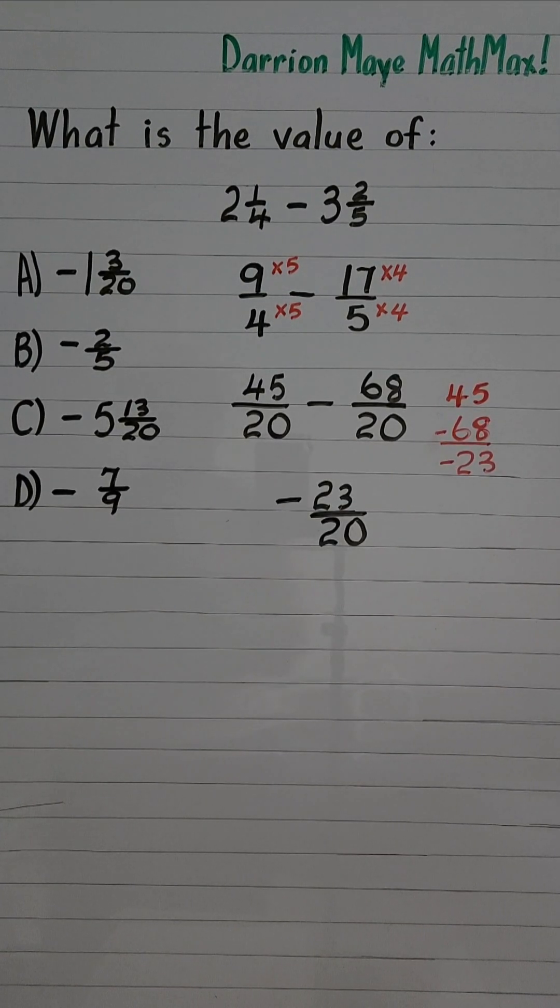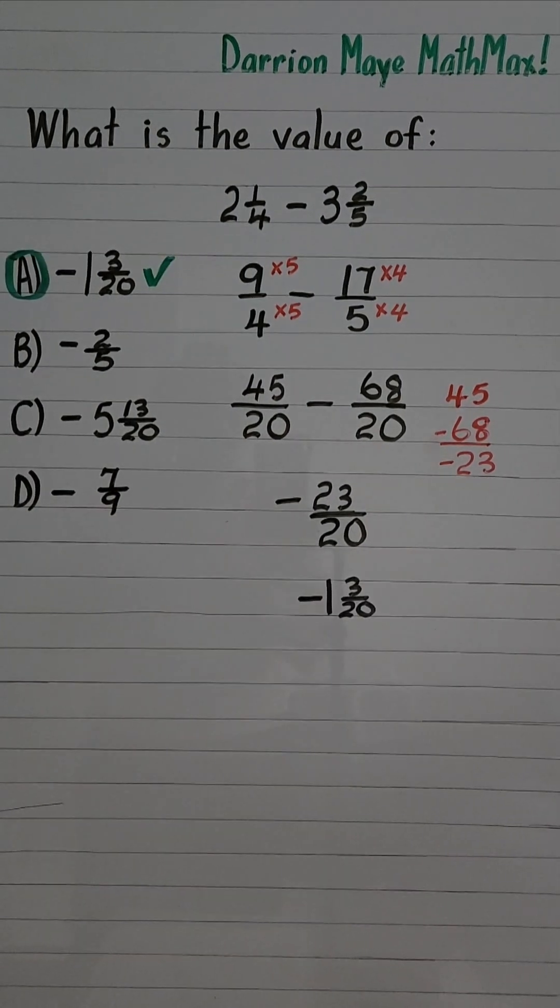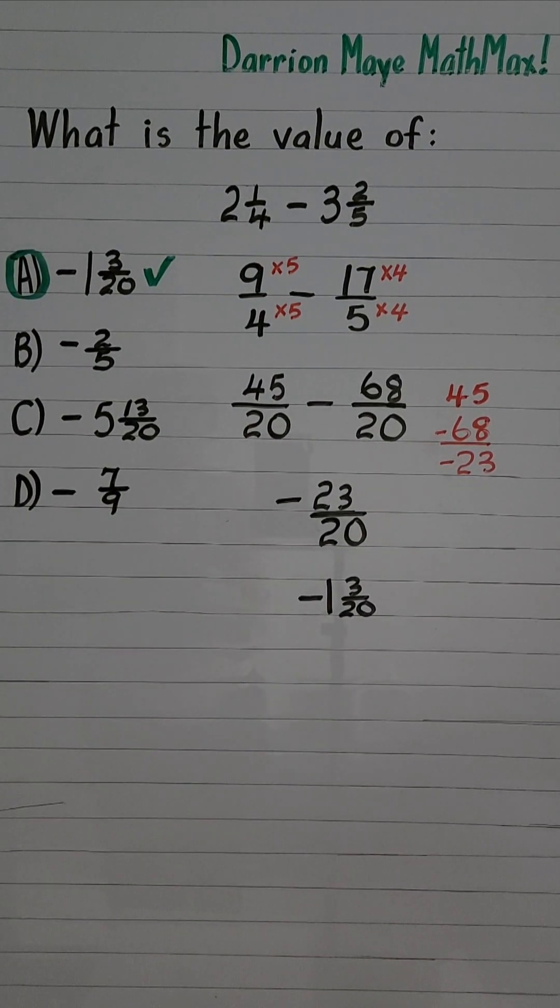45 minus 68 is equal to negative 23, so that is negative 23 over 20. Change it back to mixed number. Correct choice, A. That's the one.